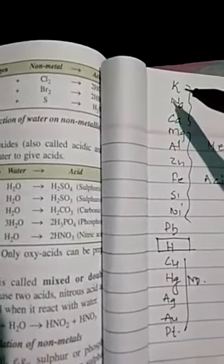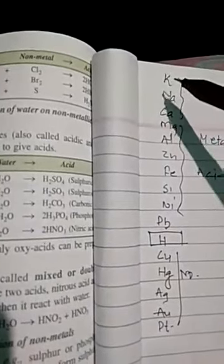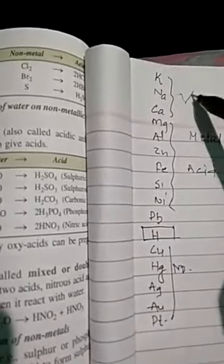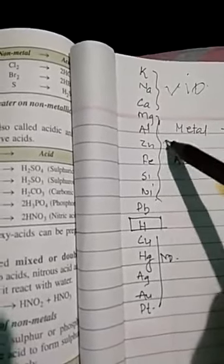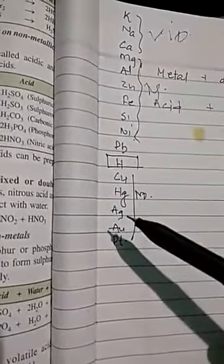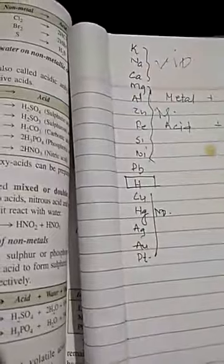We have seen the reactivity series. Potassium, sodium, calcium — these three react violently. These react moderately. But below hydrogen — copper, mercury, silver, gold, platinum — they do not react with dilute acid. So metals only from potassium to lead react with dilute acid and form salt and hydrogen gas.